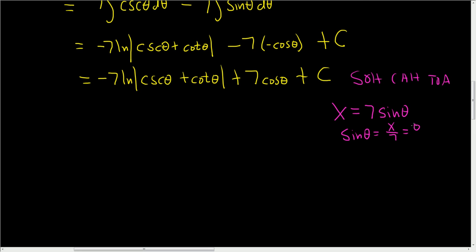And we're going to invoke the power of SOH-CAH-TOA. So here, this is opposite over hypotenuse. So when we draw our triangle, here's our theta. And so it's opposite over hypotenuse. So the opposite is x, and the hypotenuse is 7.